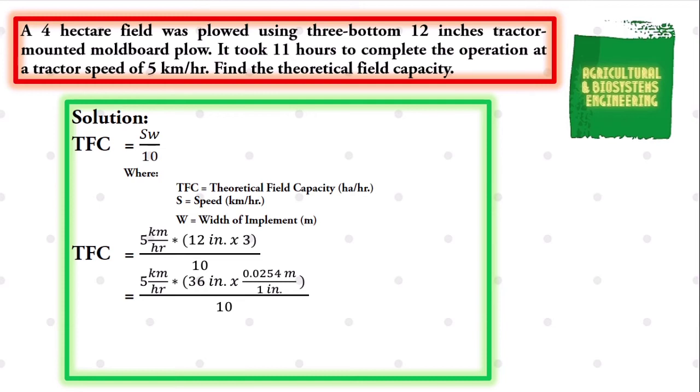We have to convert inches to meters using the conversion factor, 1 inch equal to 0.0254 meters, all over 10. Now we have 5 kilometers per hour multiplied by 0.9144 meters, all over 10.